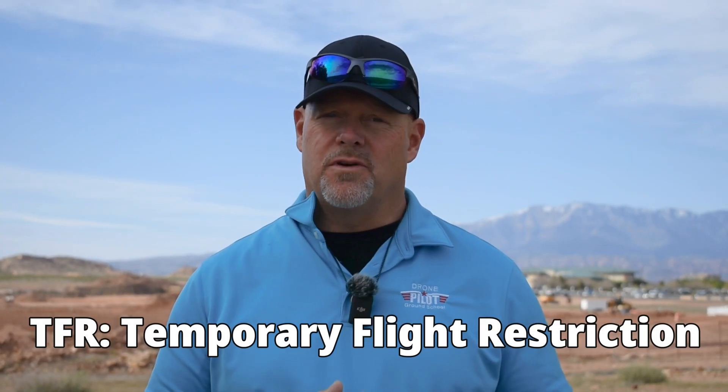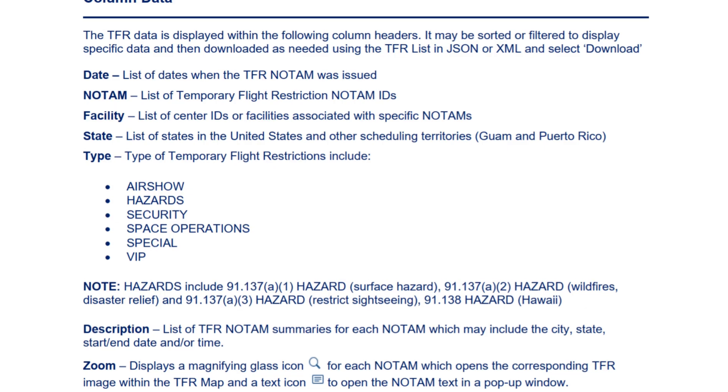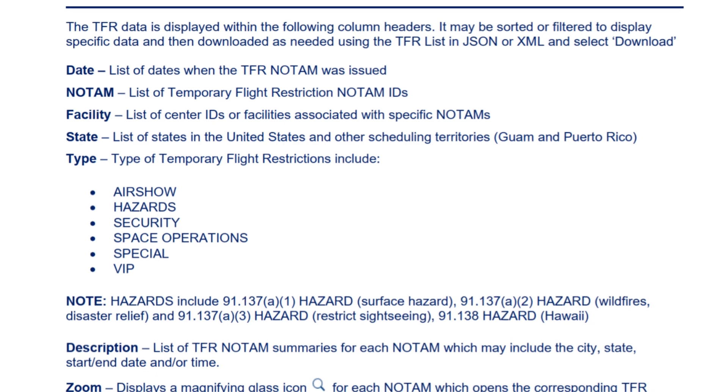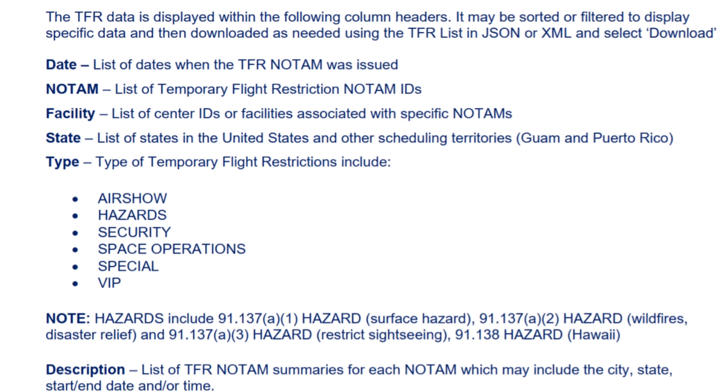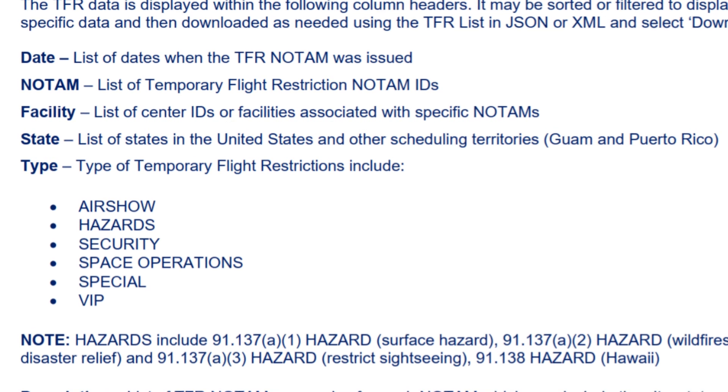First of all, what is a TFR? TFR stands for Temporary Flight Restriction. The FAA states that a TFR is a type of Notice to Air Missions, or NOTAM, that defines an area restricted to air travel due to a hazardous condition, a special event, or a general warning for FAA airspace. TFR types can be listed as air show hazards, security, space operations, special, or VIP.